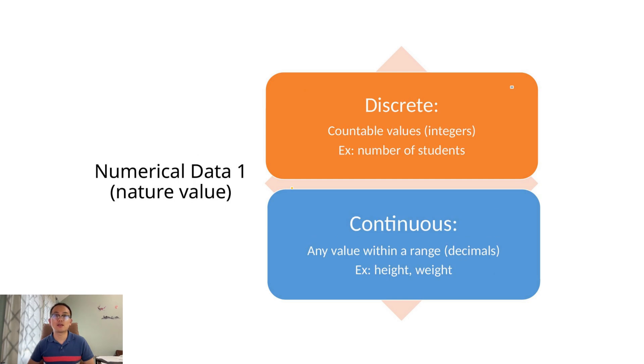Now within numerical data, we can go even deeper and break it down into discrete and continuous types. Discrete data can only take specific countable values, like whole numbers. For example, the number of students in a class or the number of cars in a garage. Continuous data can take any value within a range, including fractions or decimals. Think about height, weight, temperature, or time. These are measured, not counted. Here's a quick way to remember the difference: discrete data is counted, continuous data is measured.